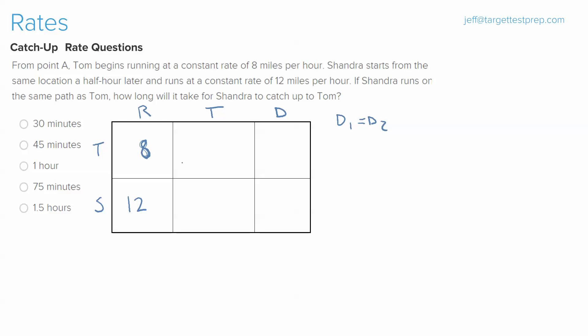So by the time Sandra catches Tom, it's quite clear that he will have been running for 30 minutes more, or in other words a half an hour more. So if we label Sandra's time as x and Tom as x plus one half, we now have both of their times and notice we only have one variable for our times.